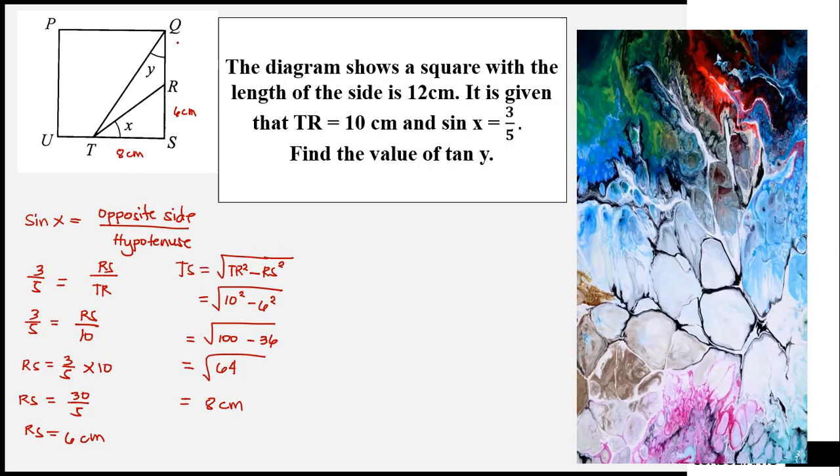Get the measurement of QR. QR is equal to QS minus RS. QS is 12 cm. So 12 minus 6 is equal to 6 cm. So QR is 6 cm.